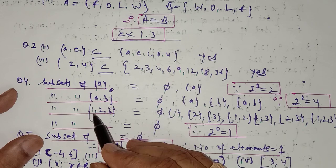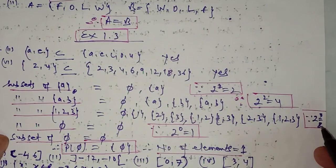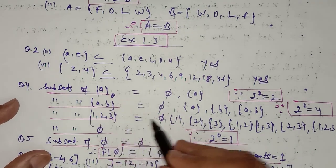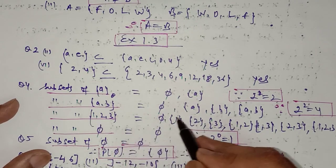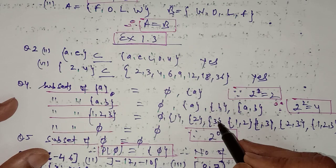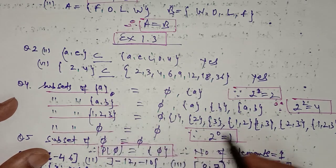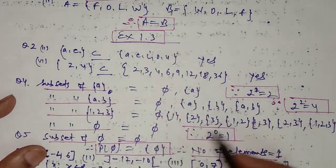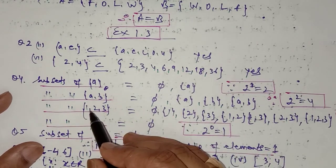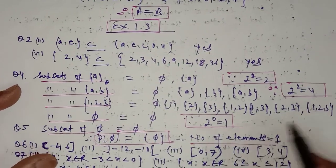For the set containing elements {1, 2, 3}, the number of subsets will be 2 raised to power 3, which equals 8. They are: empty set, {1}, {2}, {3}, {1,2}, {1,3}, {2,3}, and {1,2,3} — a total of eight subsets.